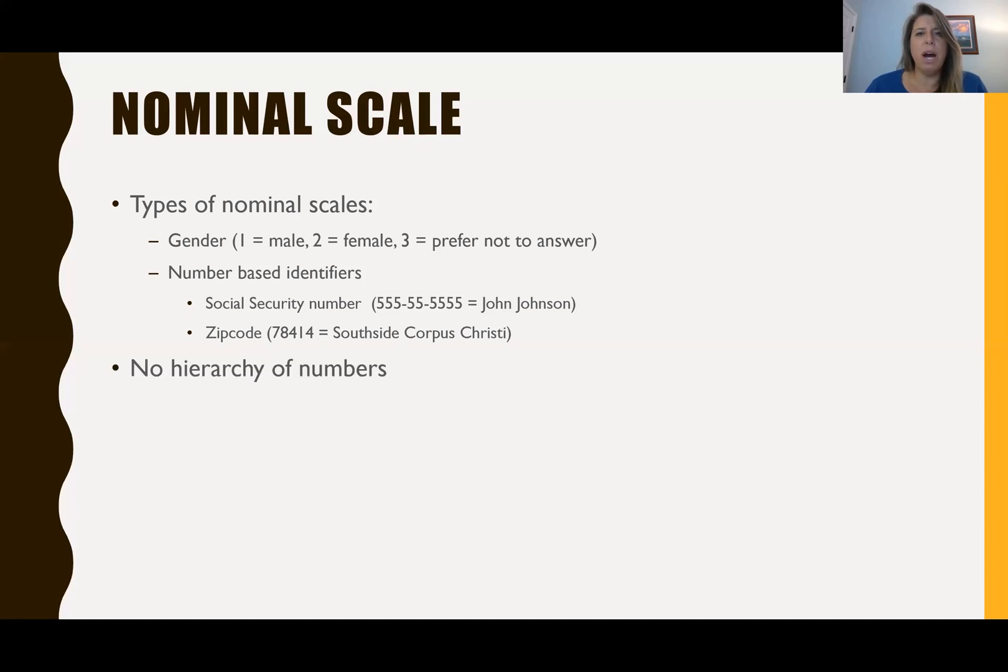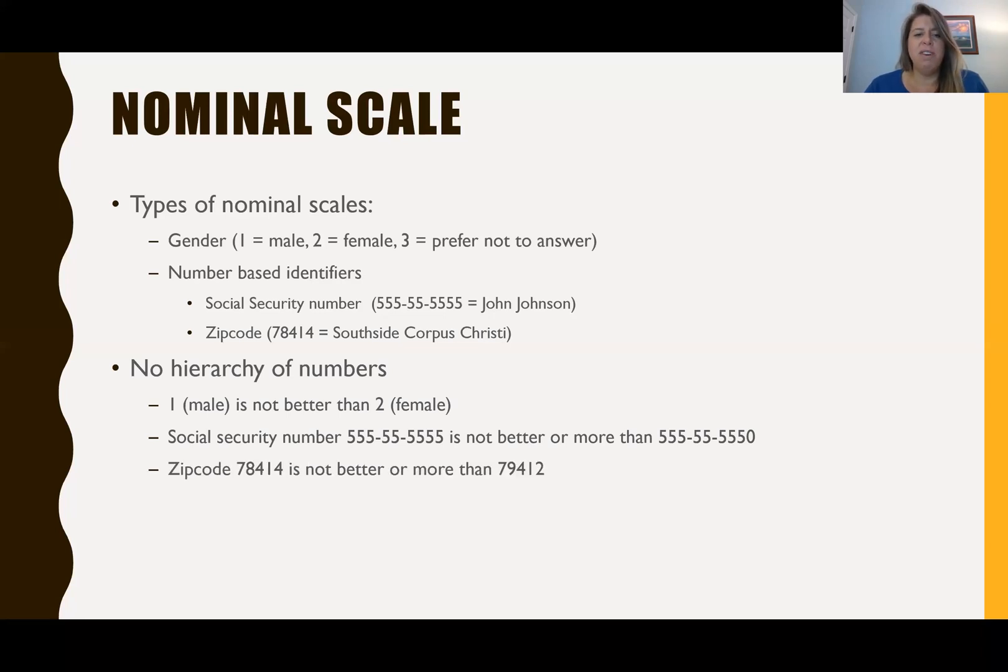So with nominal scales again there's no hierarchy of numbers. Just because you are 1 and you are male, it does not mean that you are better than 2 which is equal to female. There's just absolutely no hierarchy. Same thing with social security numbers. The 5555555555 is not better or more than 5555555550. Alright, so zip code 78414 is not any better than 79412, but what matters and what's different is that they identify two different areas. So it's the name that has meaning, not the actual number.